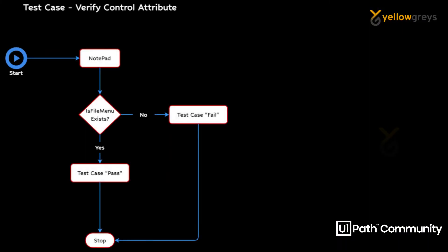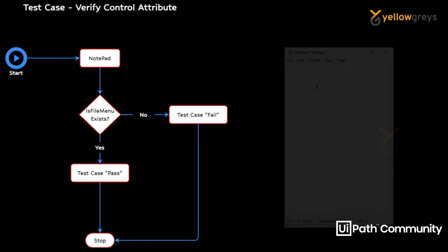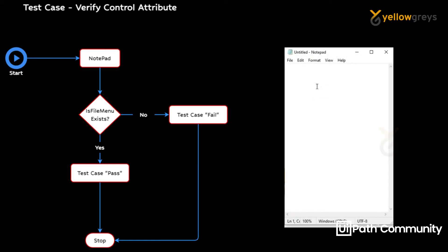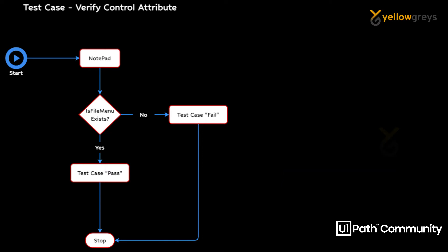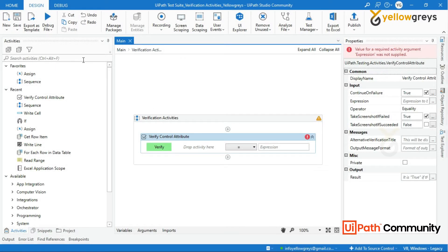I have a use case here to test Verify Control Attribute. I have a Notepad application — assume that we developed it and it's under testing. In this Notepad, I am going to check if the File menu is available or not. If the File menu is available, the test case is passed; if it is not available, the test case is failed. In the development scenario, we are going to get the text and verify it.